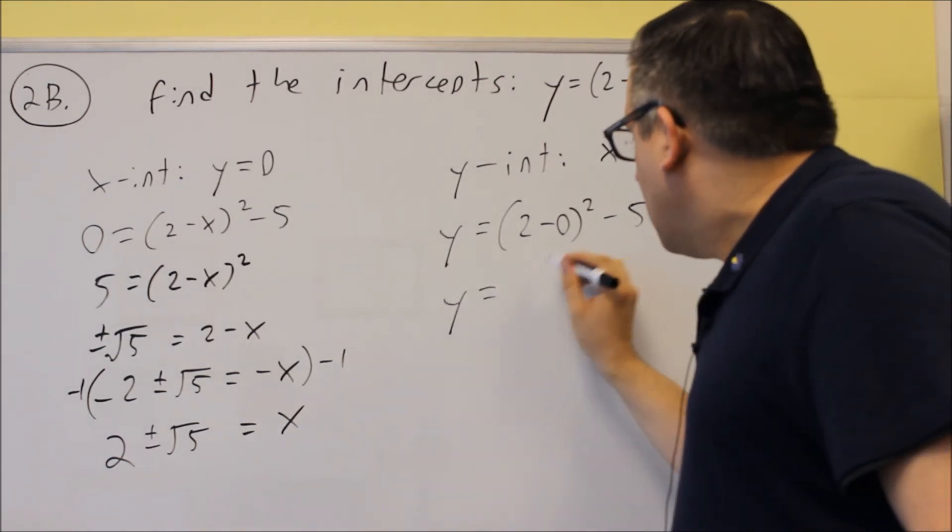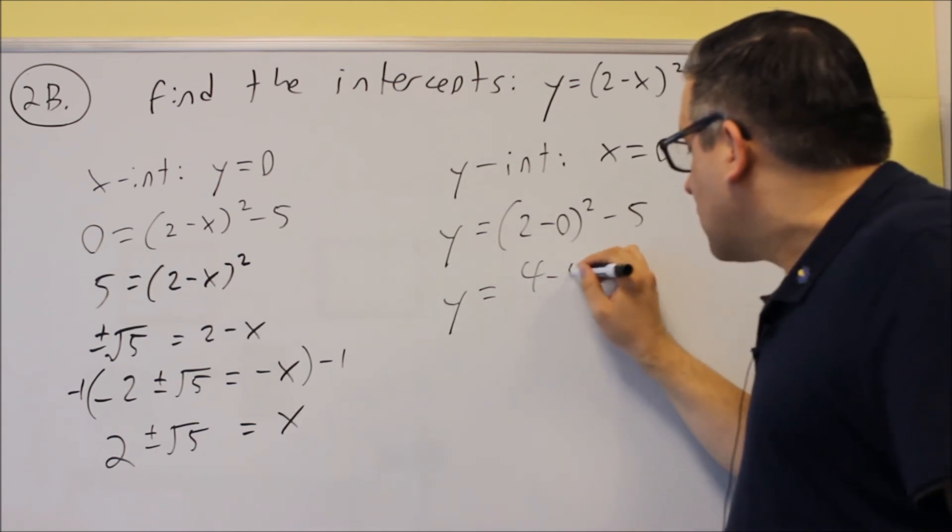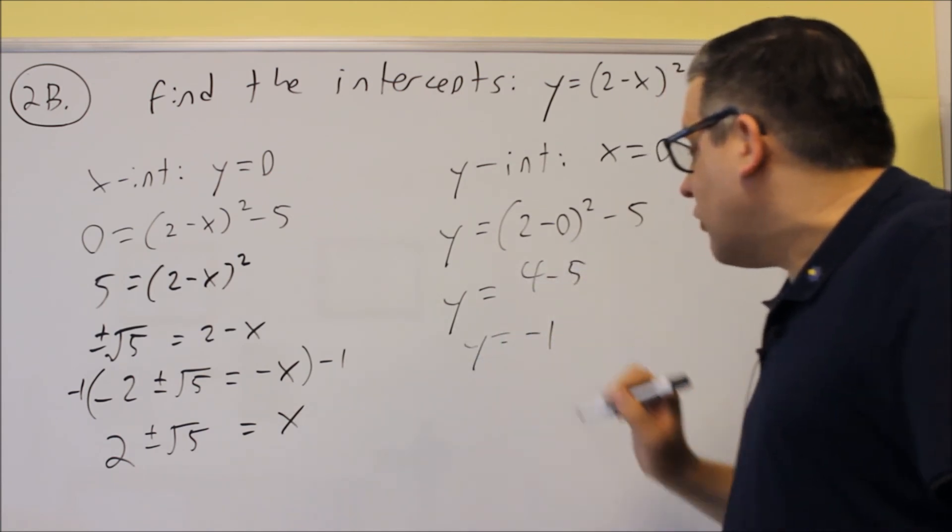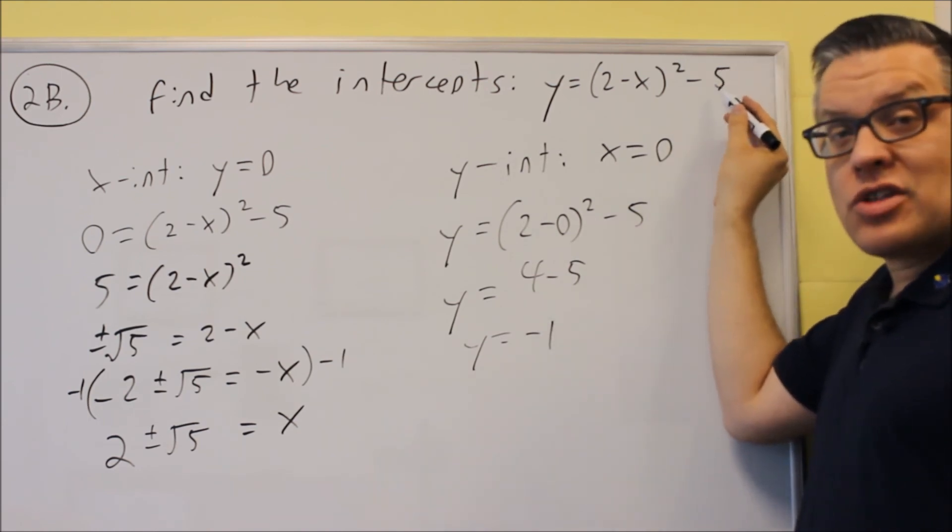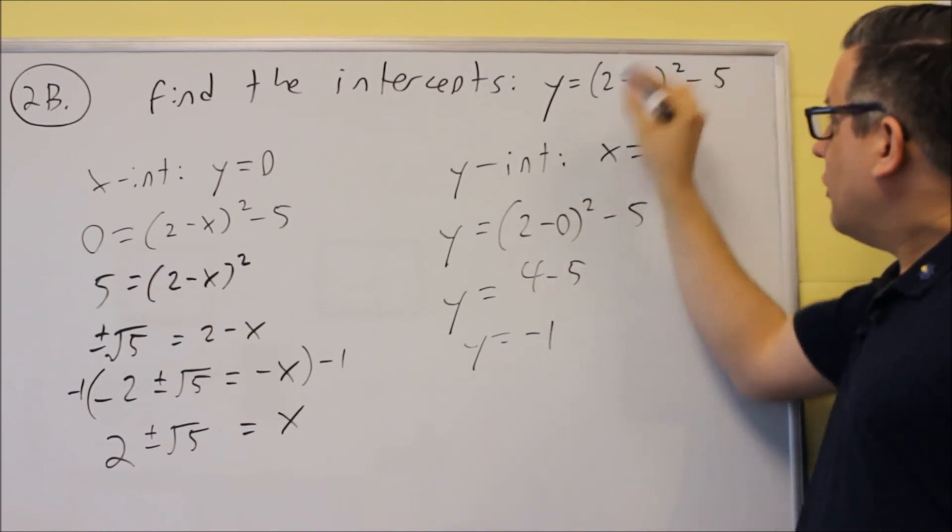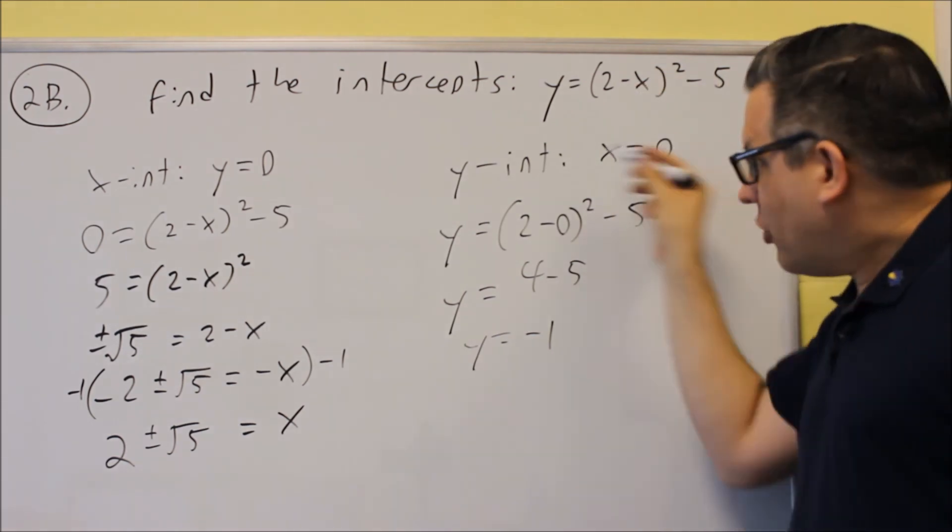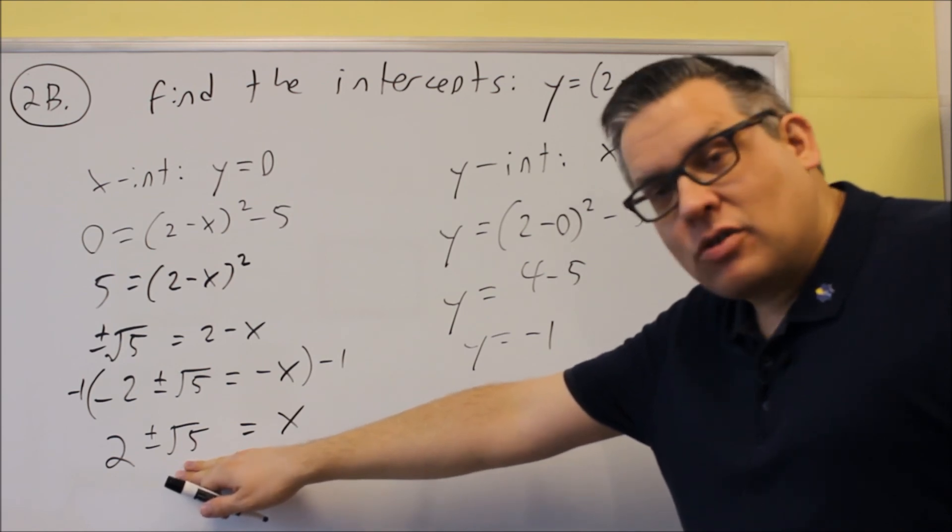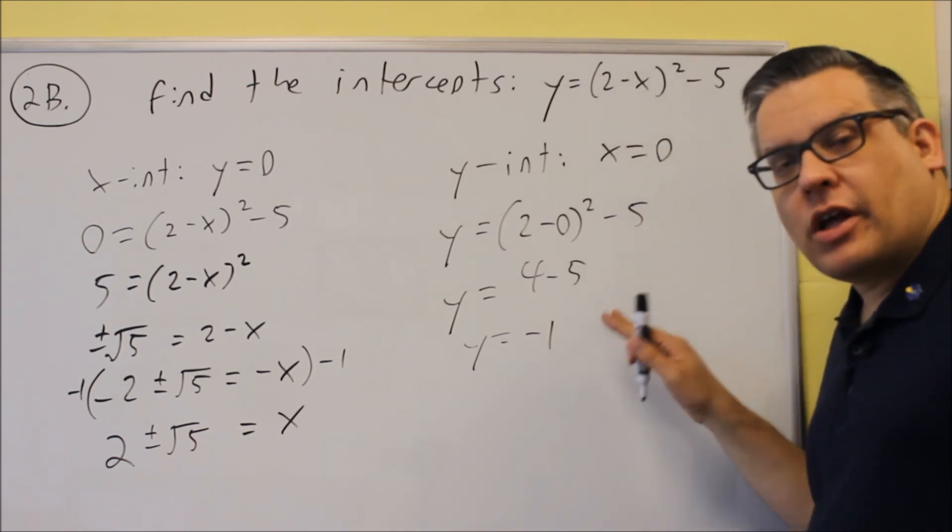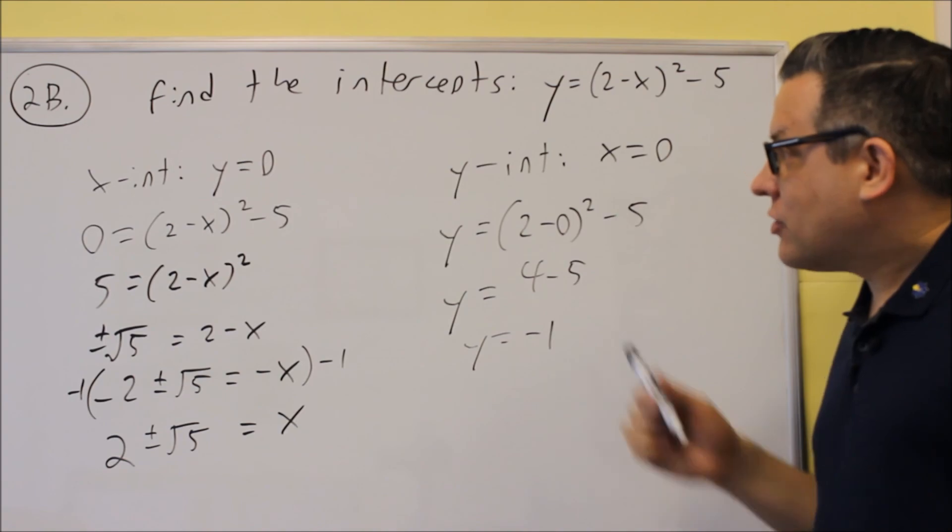Then we get 2 squared, which is 4. We get 4 minus 5, which means we get negative 1 as our answer. So don't just assume it's going to be the last number all the time. If it's written out in this form, then put a 0 in for x to get the answer. So these two here would be your x-intercepts and the y right here, y equals negative 1, that's your y-intercept.